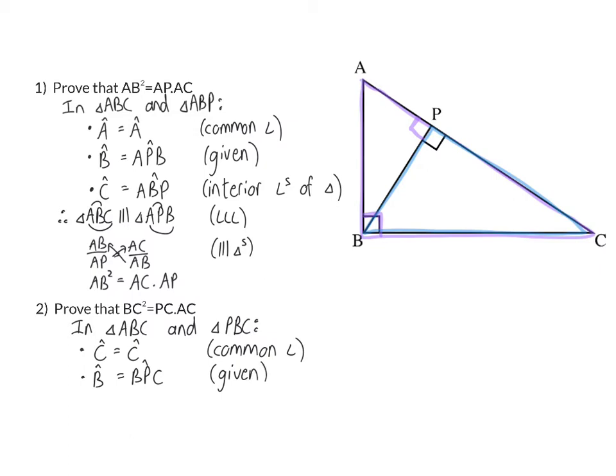And lastly, we are going to say that angle A is equal to angle PBC. And now we can make our conclusion that triangle CBA is similar to triangle CPB and my reason angle, angle, angle.